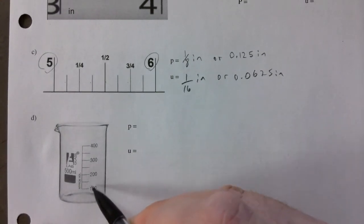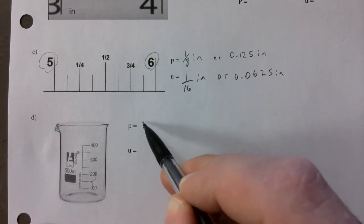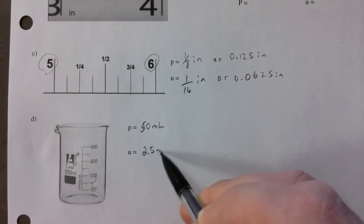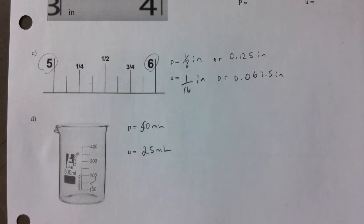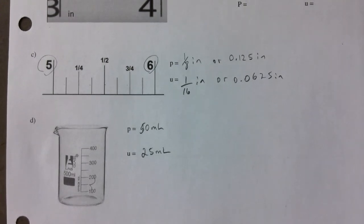Here, you're tempted to say a hundred, but it's not. It goes up by 50 at a time. So the precision here is 50 milliliters, and it's 25 milliliters for your uncertainty. Don't just look at the numbers, look at the markings.